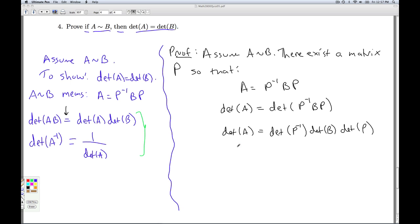Now I'm going to use the fact that the determinant of P inverse is one over the determinant of P. At this point, the determinant of P cancels. Guess what I get? The determinant of A equals the determinant of B.